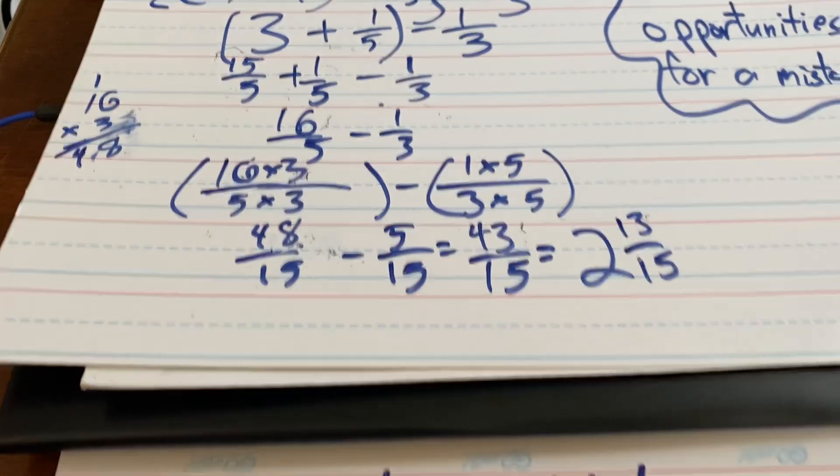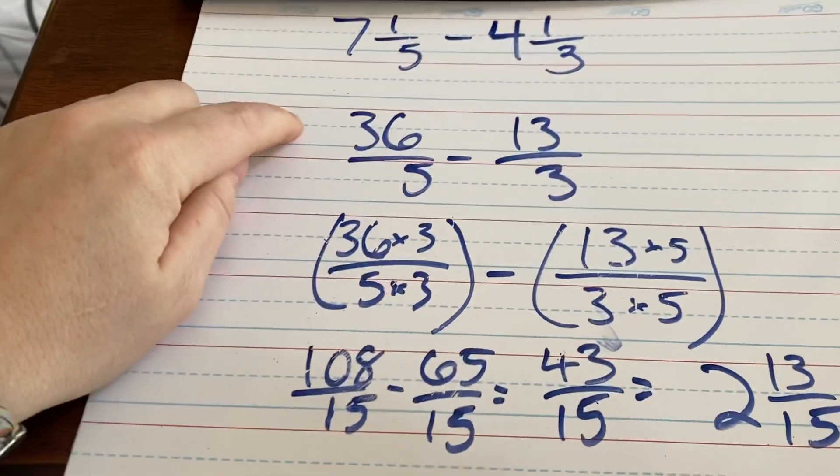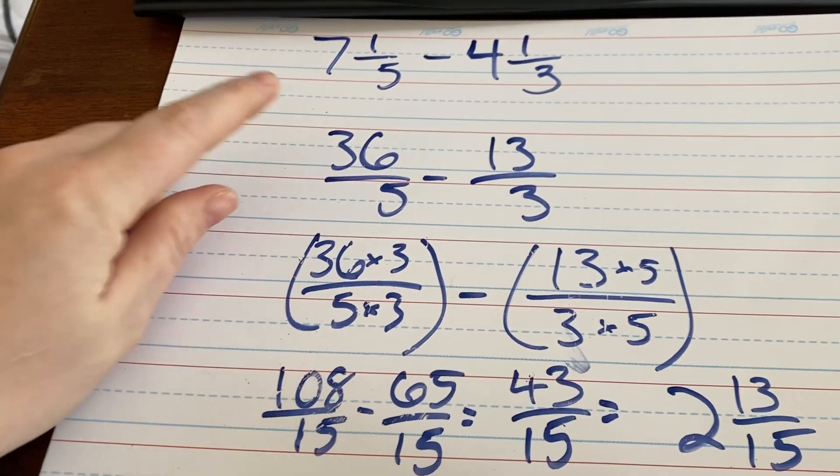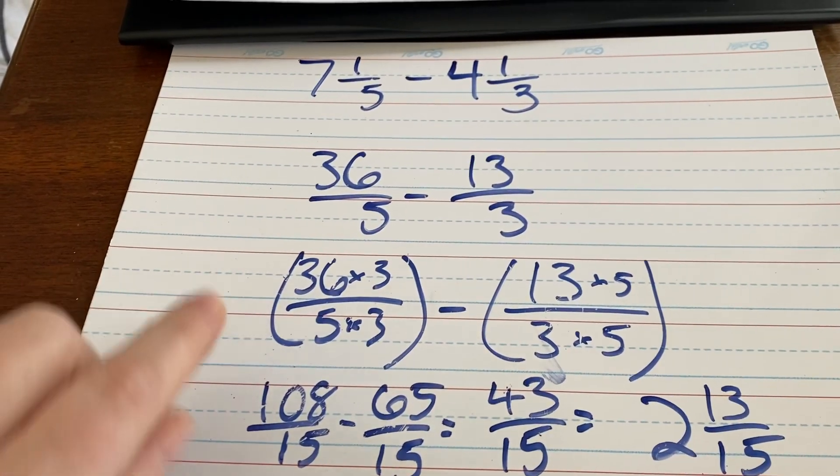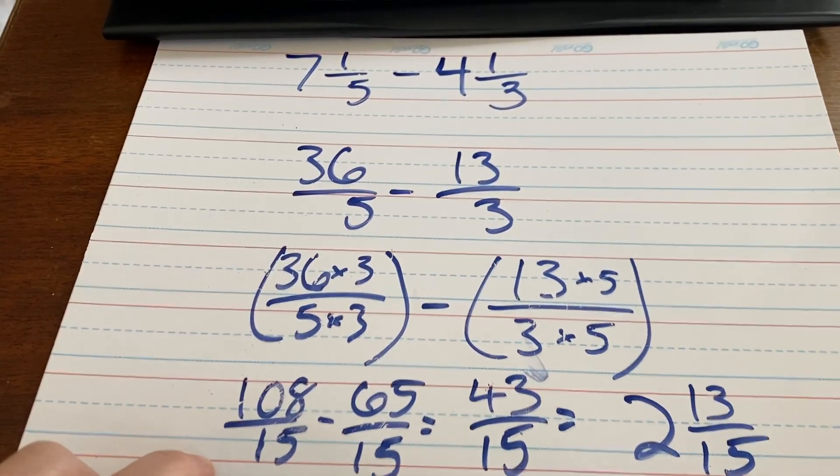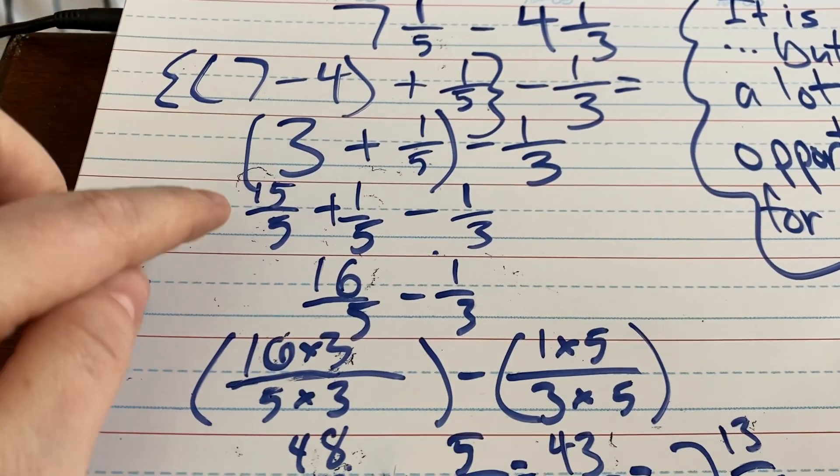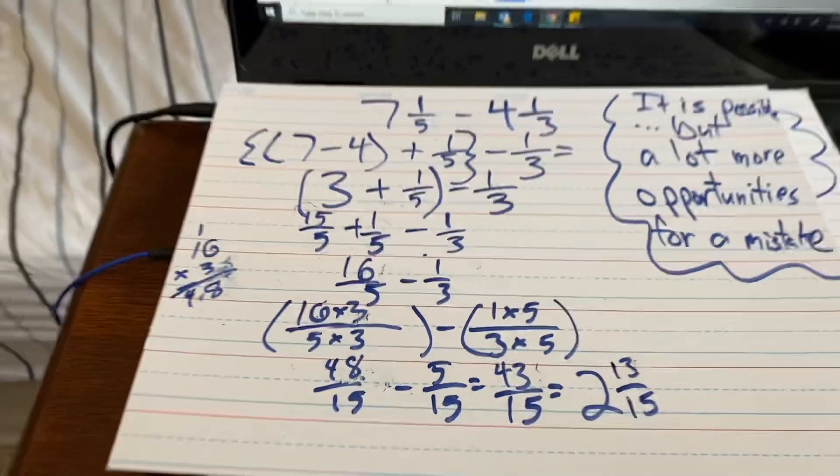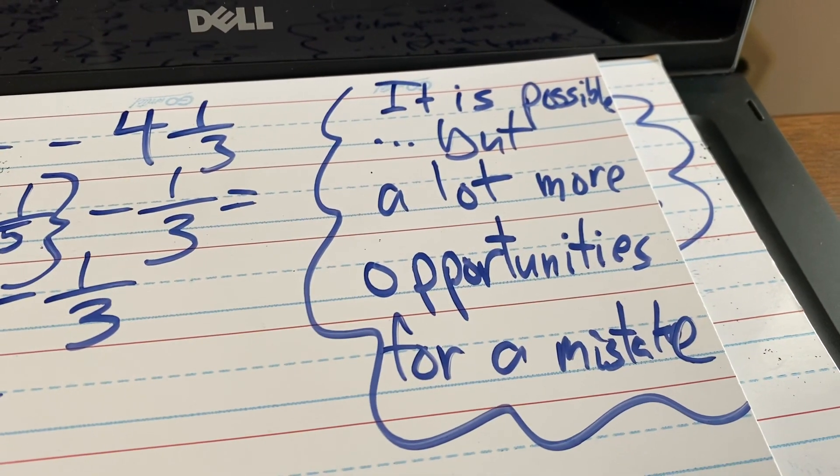We did get the same answer, but I just want you to look and count up all the steps. So, step 1, rewrite as an improper fraction. Step 2, multiply those fractions to find a common denominator. Step 3, subtract and simplify. Up here, we add step 1, step 2, add back in the fraction part. Step 3, step 4, step 5, 6. So, way more steps and way more opportunities for a mistake.